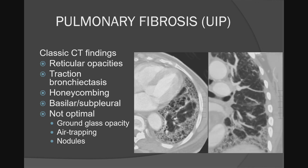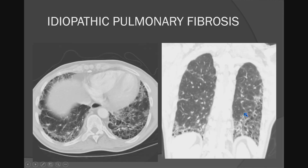This is another example showing many of those things: honeycombing, traction bronchiectasis, areas of reticulation, and also showing that it's subpleural and basilar predominance. If it gets severe enough, the basilar predominance may start to disappear, but that would certainly be the classic presentation. Just another example showing the same thing.